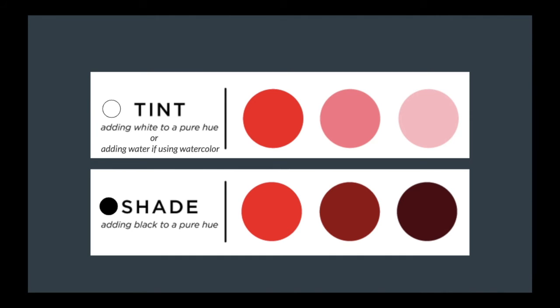And then a shade is when you add black to your pure hue, and it's going to make your color darker, just like that second row of reds. So those are your shades on the bottom and your tints on the top.